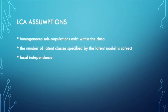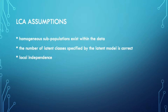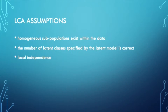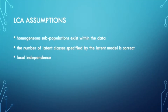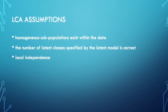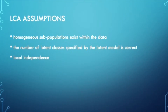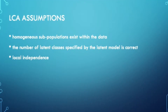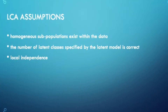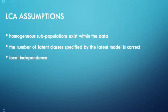The latent class method relies on the assumption that homogeneous subpopulations exist within the data. These subgroups have distinct probability distributions and are mutually exclusive. Because these subpopulations do not overlap, all classes together account for 100% of the population. Further, LCA assumes that the number of latent classes specified by the latent model is correct. Another assumption is that of local independence. Specifically, LCA assumes that all relationships among the observed variables are accounted for by the latent class membership.